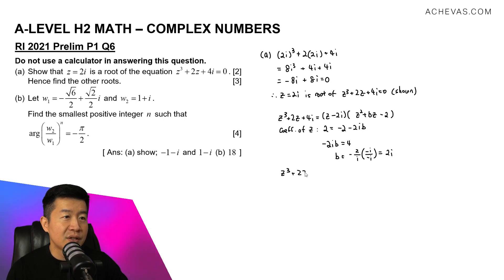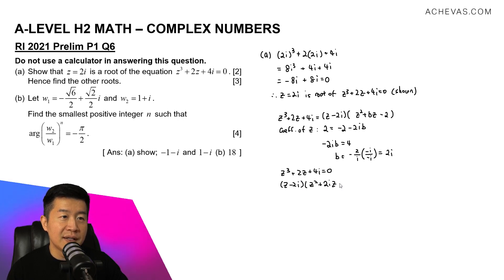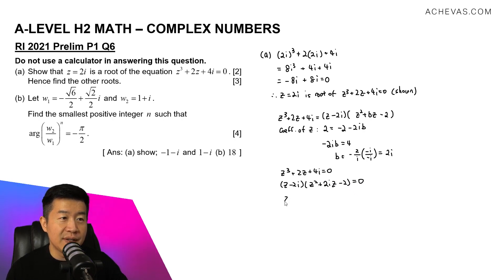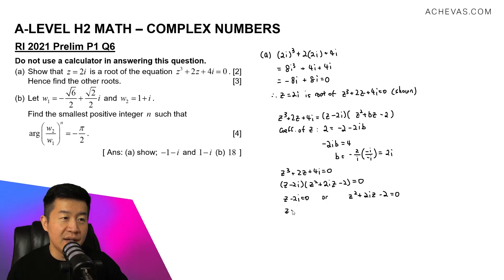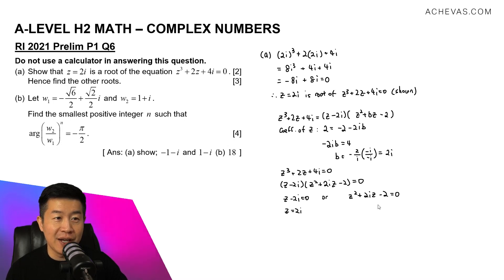So z³ + 2z + 4i = 0 can be re-expressed in factorized form as (z − 2i)(z² + 2iz − 2) = 0. If this product equals zero, then either z − 2i = 0, giving z = 2i, or z² + 2iz − 2 = 0. Since z = 2i is not what we are looking for here, the other roots come from the quadratic factor.